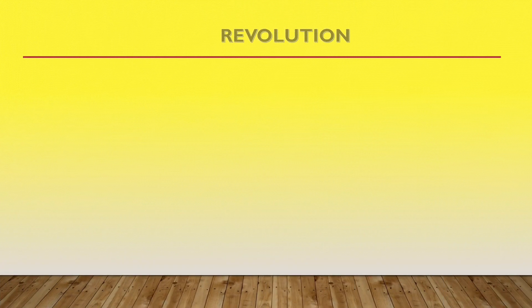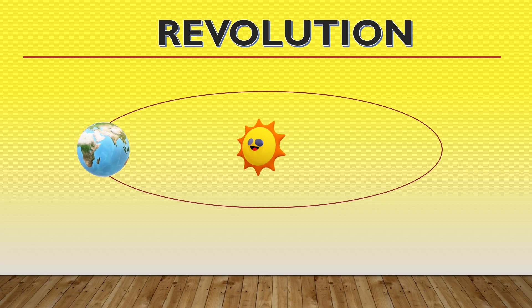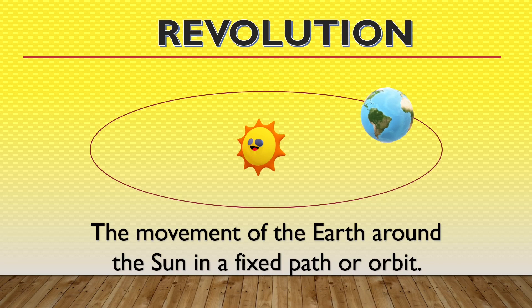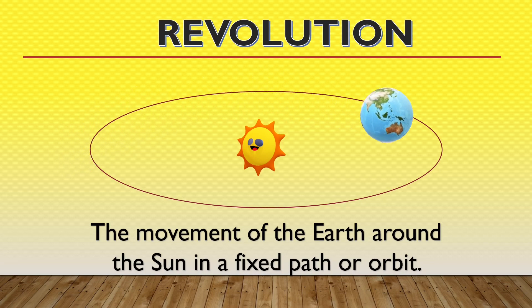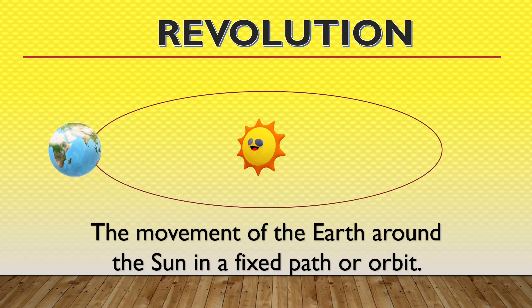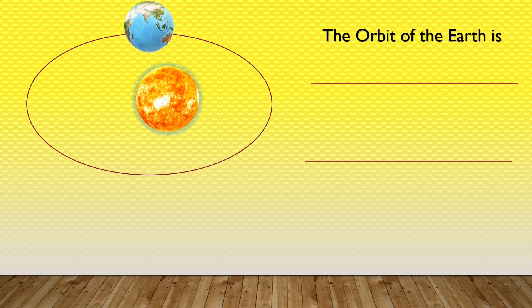What is Revolution? The movement of the Earth around the Sun in a fixed path or orbit is called Revolution. The orbit of the Earth is elliptical.